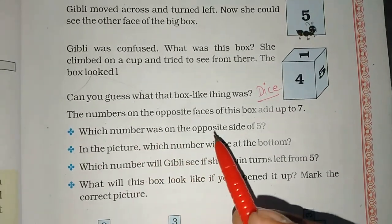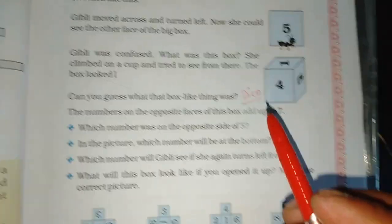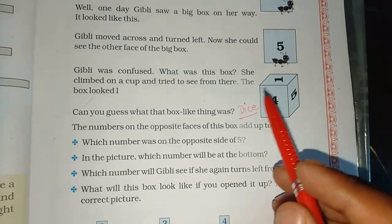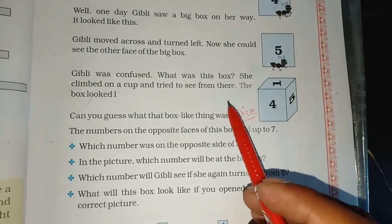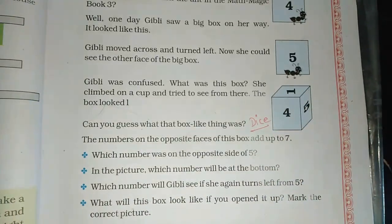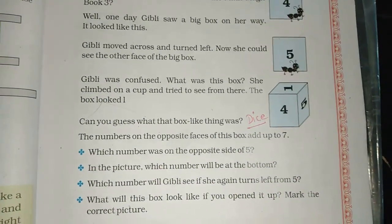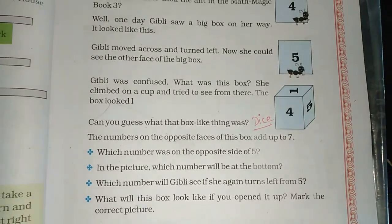The numbers on the opposite faces of this box add up to seven. The numbers are written on the opposite sides. The opposite side and the number on the other side, the total should be 7.